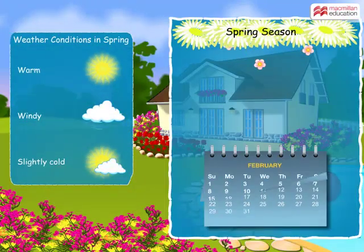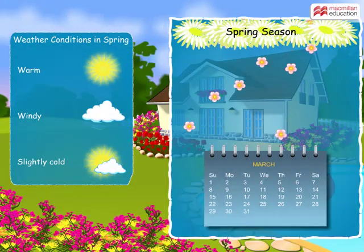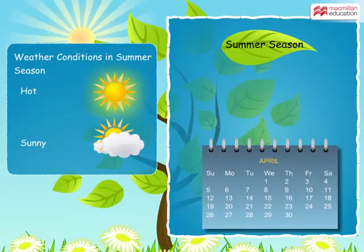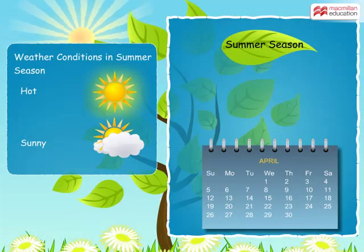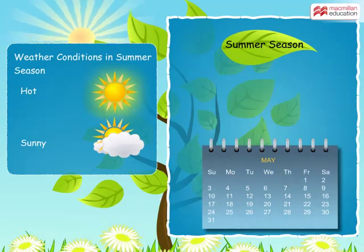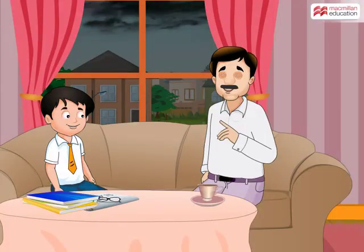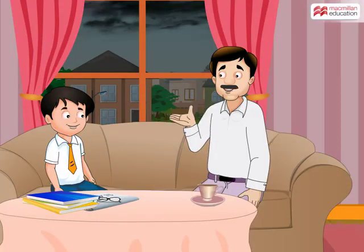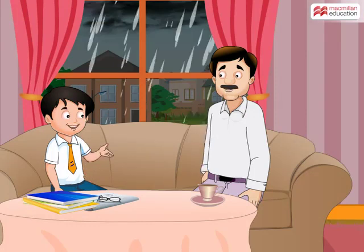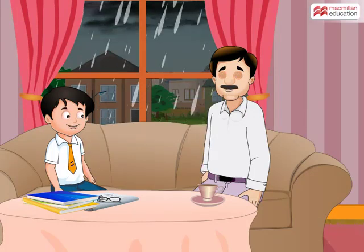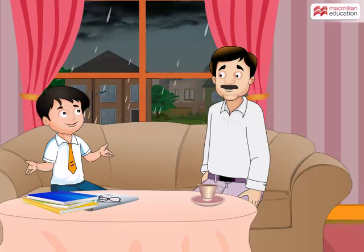Then spring comes, bringing pleasant weather, and after that we have summer season. I don't like summer — the weather is too hot and I don't like the hot wind that blows in summer. Looks like you have understood the difference between weather and season now! Yes, Dad — look, it started raining again! The weather will no longer remain hot now.